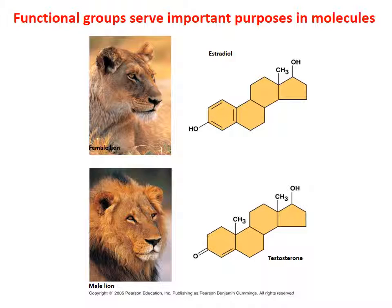Let's look at these two steroid hormones — estrogen and testosterone. If you look at them, they look pretty much the same, except estradiol has an HO group on the far left side, while testosterone has just an O. Testosterone also has a CH3 methyl group, and then another CH3 and an OH group in similar positions. We can only spot a couple of differences between these two, but what a difference that makes — one will make you female, one will make you male. That's a huge functional difference from just a very small change in chemistry. Change the structure slightly, and you change the function.